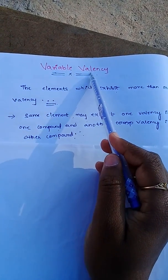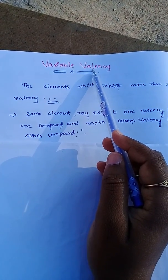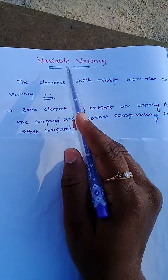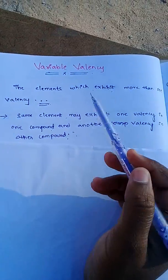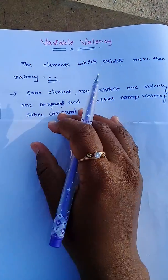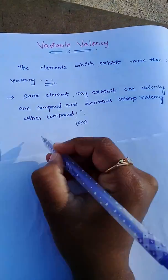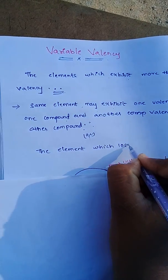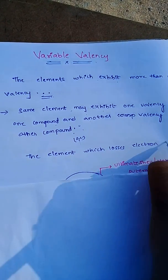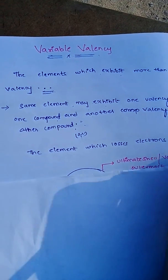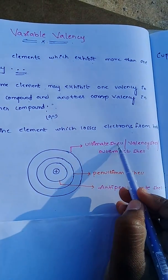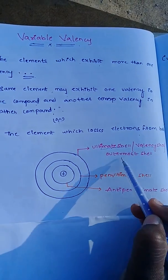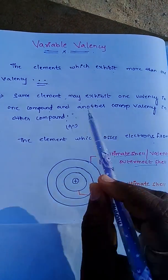What is meant by valency? Valency refers to the electrons in the outermost shell that an element uses to obtain a stable electronic configuration. Variable valency means the element which loses electrons from both the ultimate shell (outermost shell) and the penultimate shell, known as variable valency.